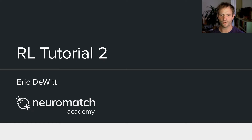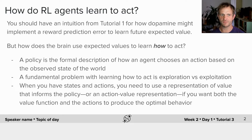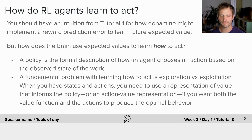Welcome back to reinforcement learning tutorial number two. Here we're going to talk about how reinforcement learning agents learn to act. You should have an intuition from tutorial one for how dopamine might implement a reward prediction error to learn future expected value. But how does the brain use expected values to learn how to act?